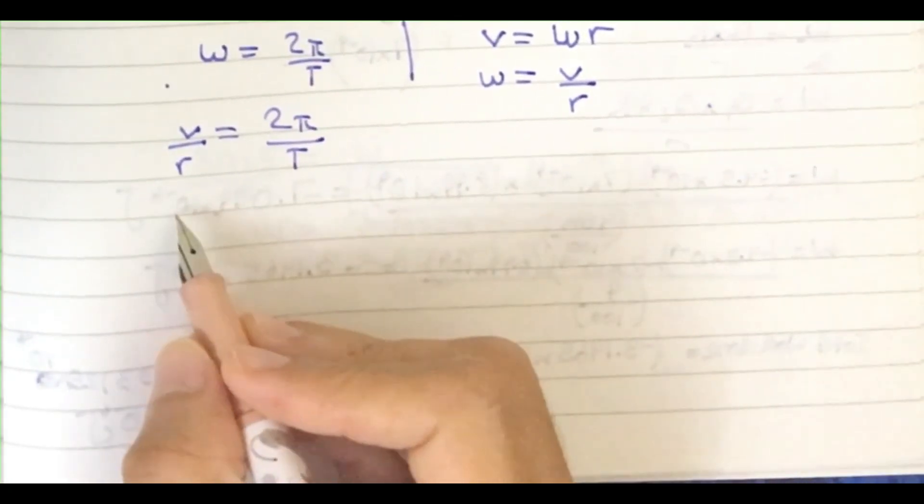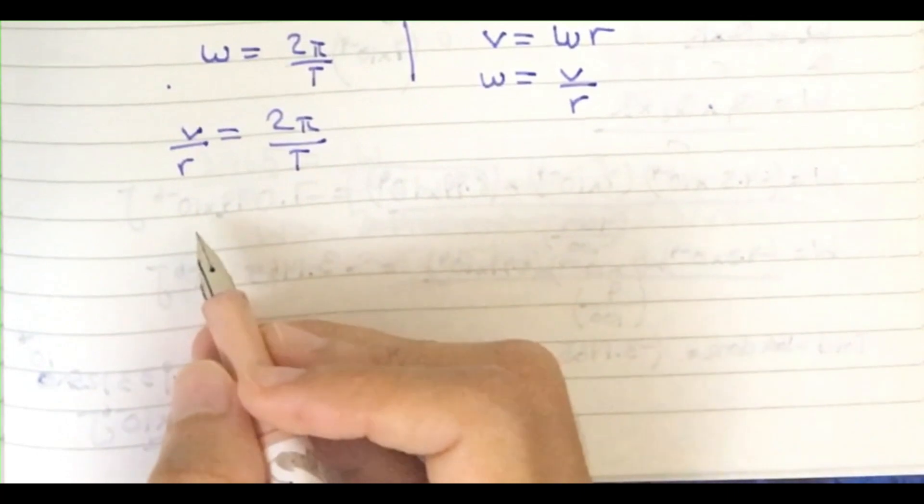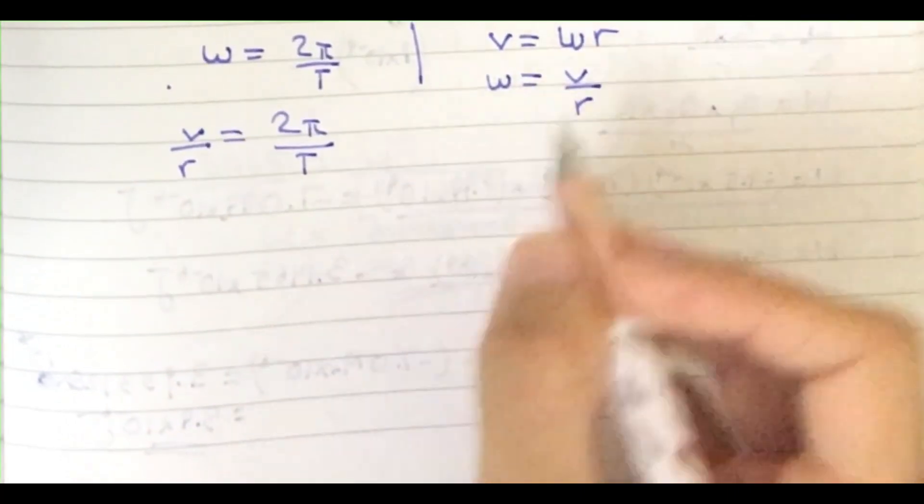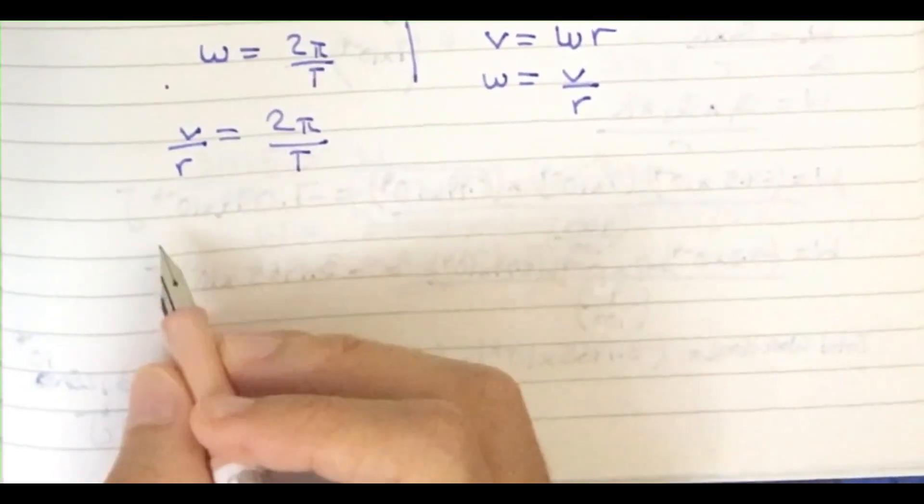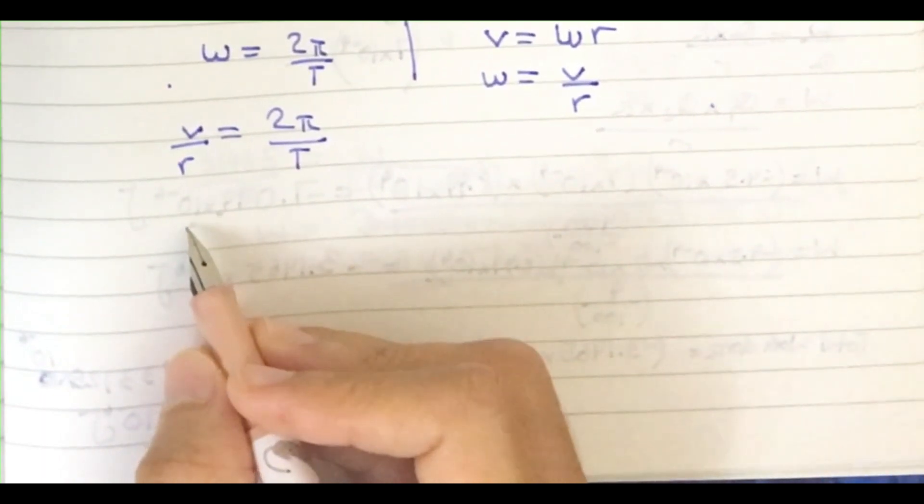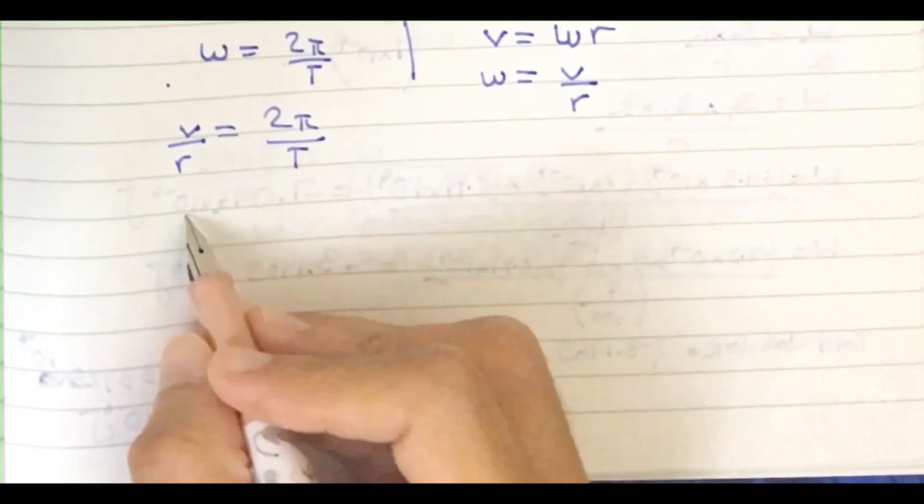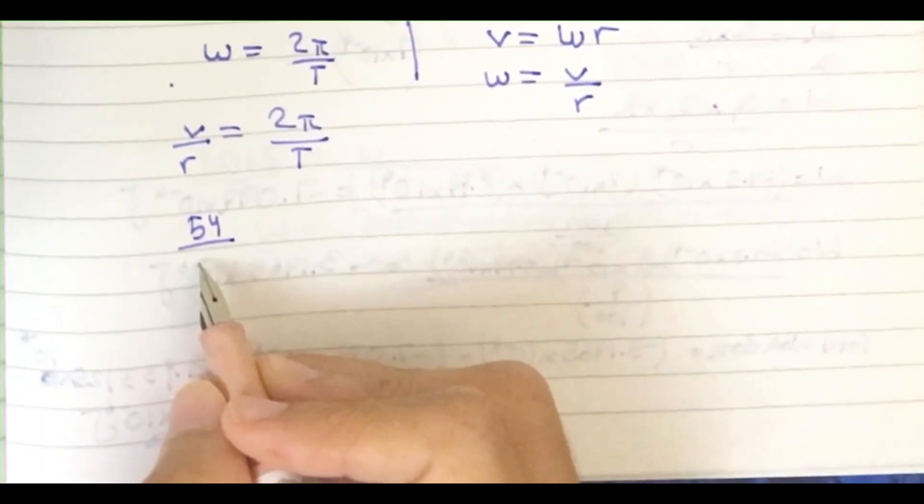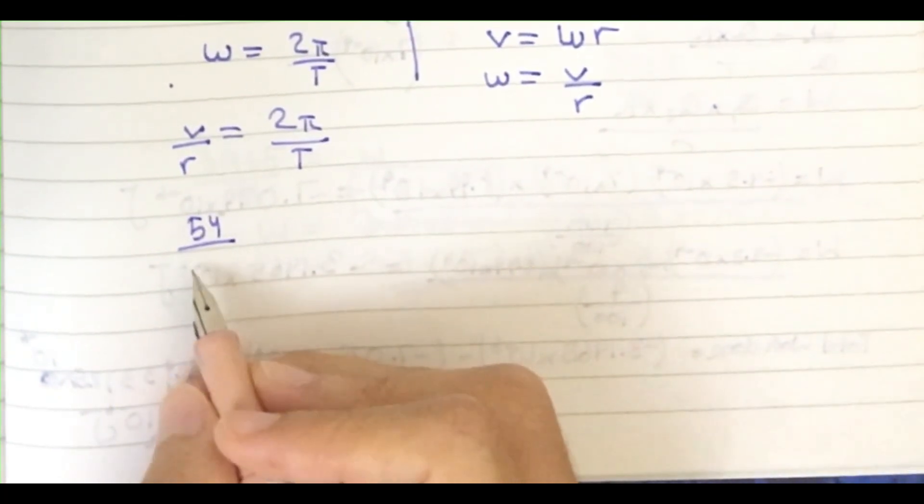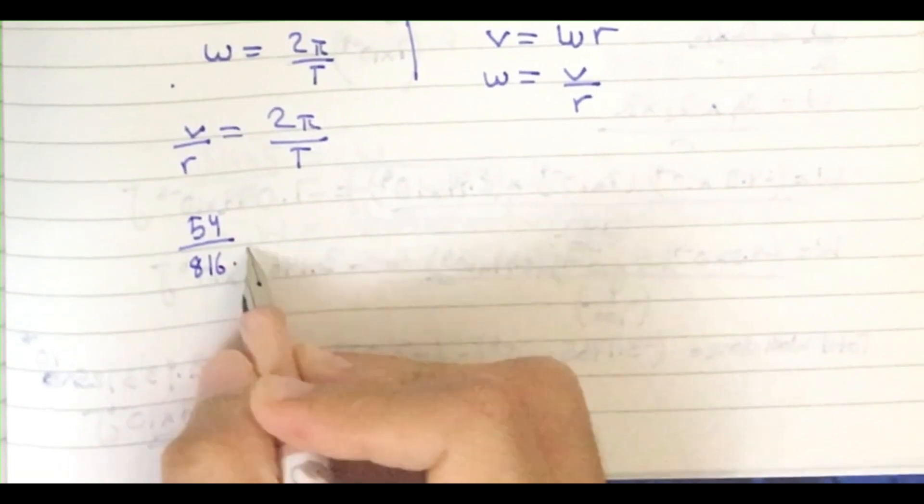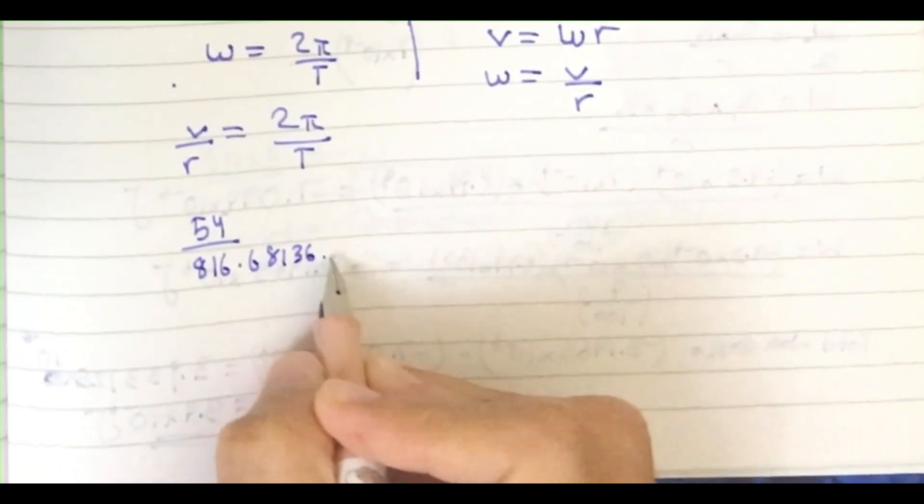The radius is 816.68136. I can write the exact same thing here. My v is given as 54, so 54 divided by r, which is 816.68136, and so on.